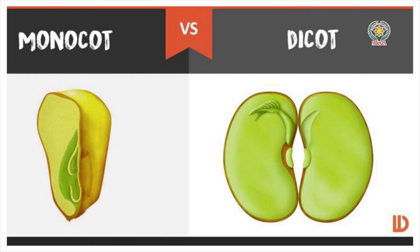Mango is a fruit which has only one seed, and so does peach. Fruits which have many seeds include watermelon and melon. You have understood this very obvious example. Moving on to the next page.